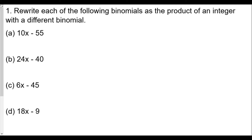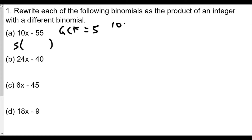We'll be using something called the Greatest Common Factor, or GCF — the biggest number that divides evenly into all the terms of the binomial. For part (a), the GCF is 5. We write 5 times a binomial, and to find the binomial we divide each term by the GCF: 10x divided by 5 gives 2x, which is the first term.